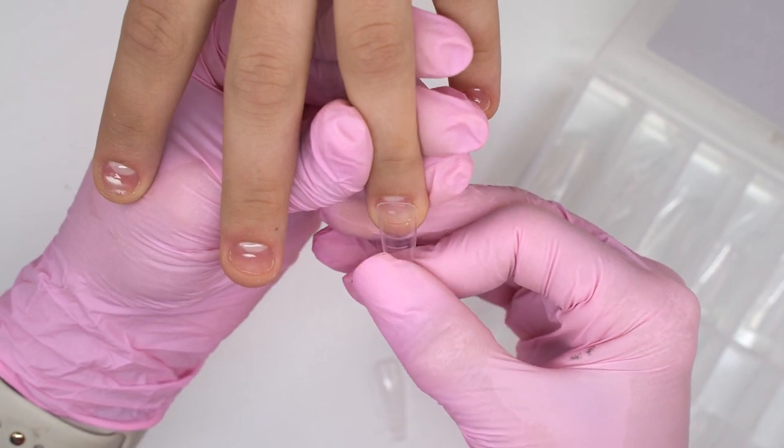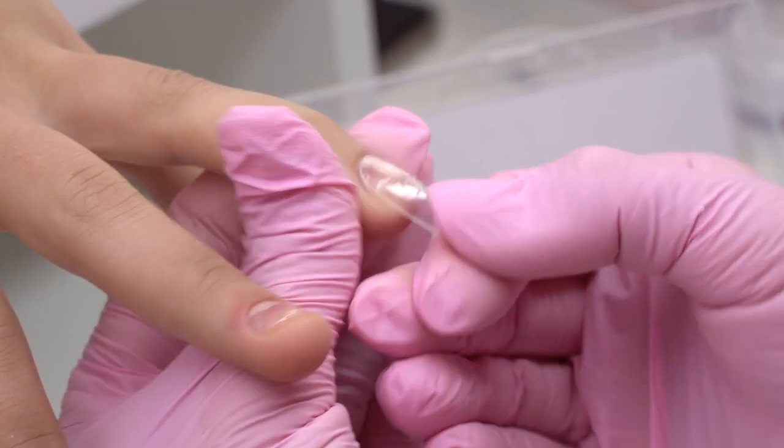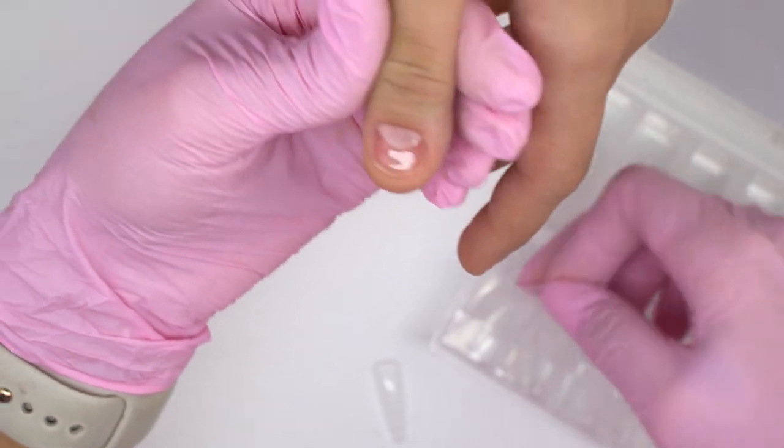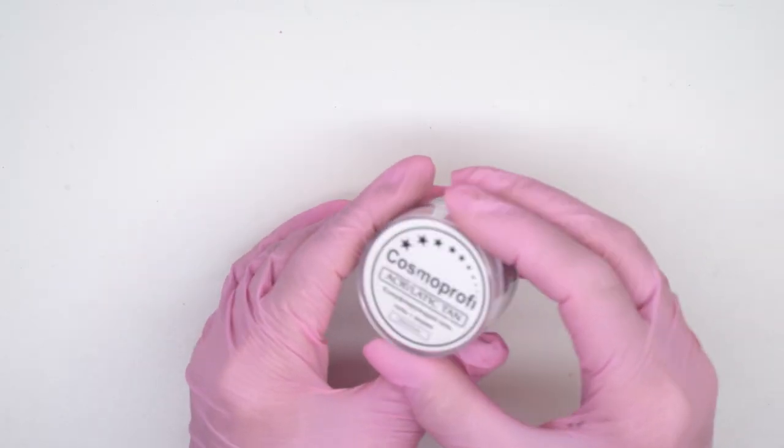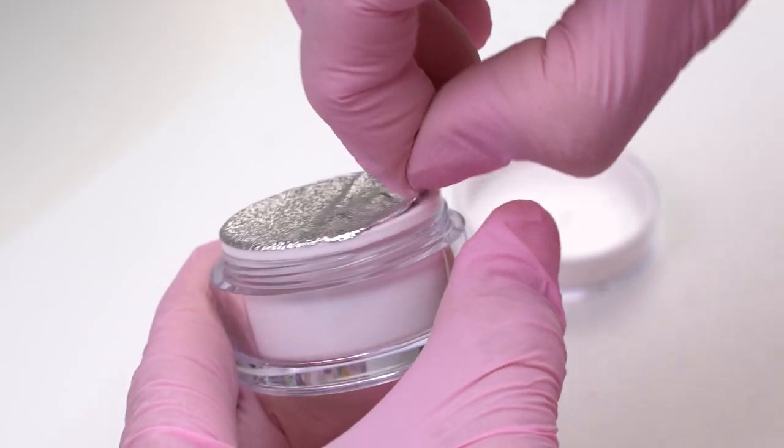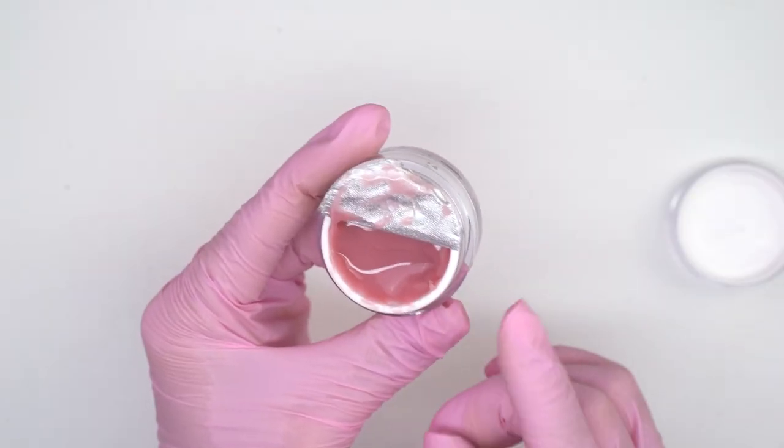I will use this ballerina form today to sculpt a narrowed square. It will complement the short nail plate. The form should fit in the stress points. We will use Acrygel for sculpting. That is the best material to use with dual forms.